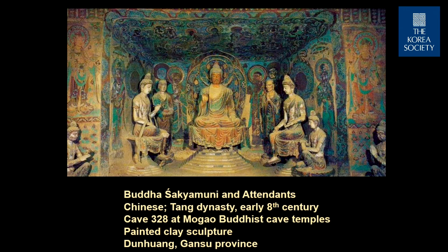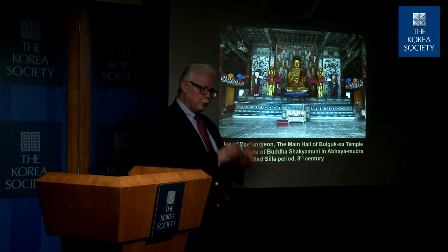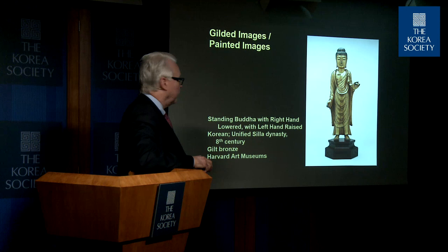In groupings from China at Dunhuang: a Buddha, Bodhisattvas on either side, yet more Bodhisattvas, and disciples — Ananda the young disciple, Kaishapa the old disciple. Notice that it's not just sculpture but an ensemble of sculpture with wall paintings. The same is true at Pulguksa in Korea — you have the sculptures, the Buddha, the Bodhisattvas on either side, other figures, combined with wall paintings behind. So it really is an ensemble. Things are hierarchically arranged, and when you see something in a museum, it's important to try to understand what the original context might have been.